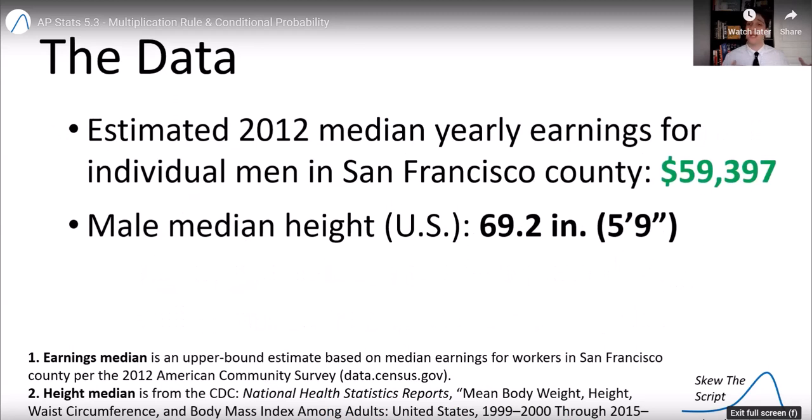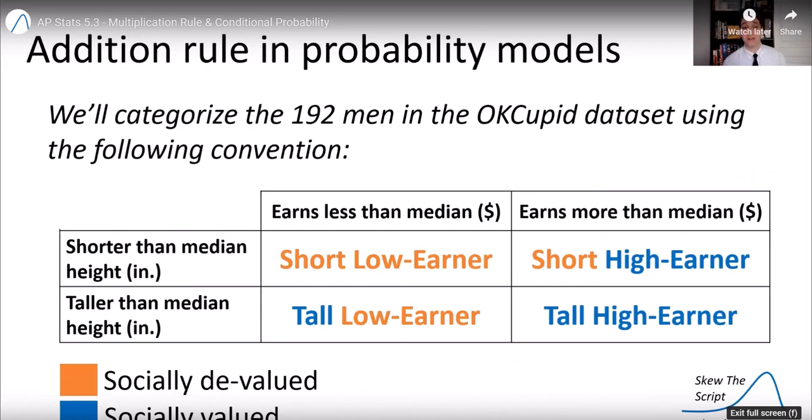This data is compared to a couple of medians. We estimated the 2012 median yearly earning for individual men in San Francisco County is about $59,397. This is an upper bound estimate. And then the male median height in the United States is 69.2 inches or 5 foot 9.